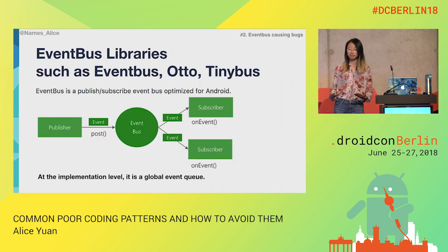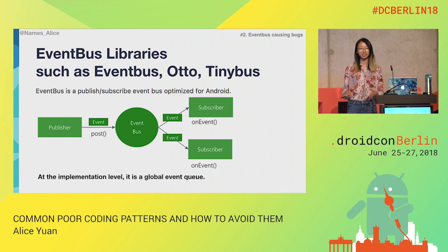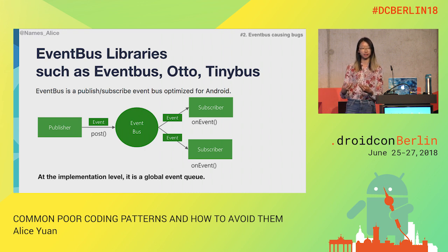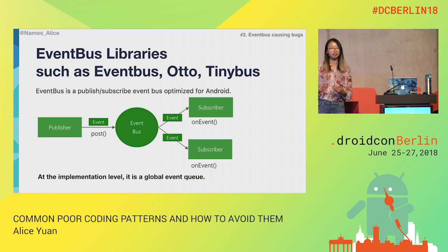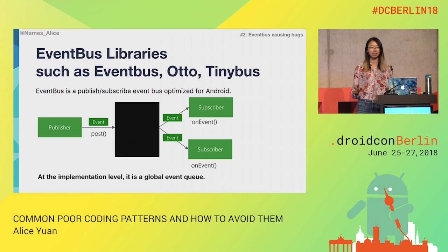The reason behind all of this is that I decided to use a library called EventBus. EventBus is a publish-subscribe library, and at the very implementation level, it is a global event queue. When you think about sending events from EventBus, when the publisher sends events, it's going into this queue where it has no idea where those events are going to go. And the subscriber has no idea where those events are coming from. So at the very crux, it's a black box.